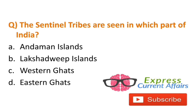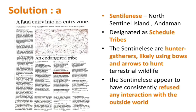Question: The Sentinel tribes are seen in which part of India — Andaman Islands, Lakshadweep Islands, Western Ghats, or Eastern Ghats? The answer is A — Andaman Islands. This is in the news because John Allen Chau, an American national, was allegedly killed by the Sentinelese tribes. These tribes are located on North Sentinel Island of Andaman and are designated as scheduled tribes by the Government of India. They are hunter-gatherers who use bow and arrows and refuse any interaction with the outside world.